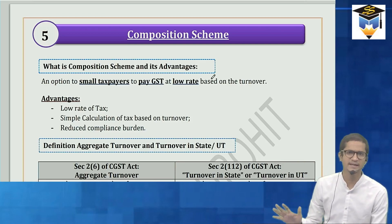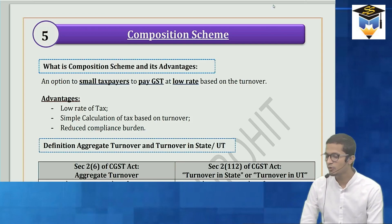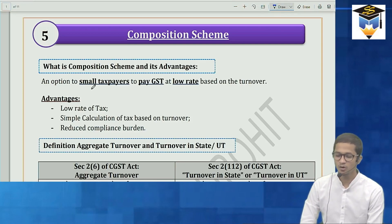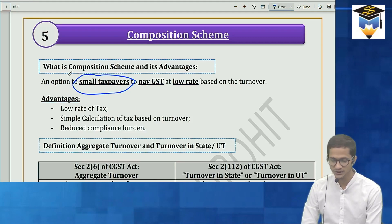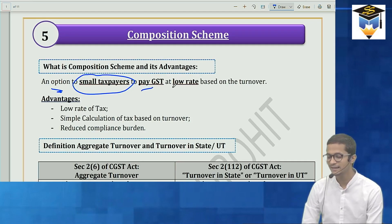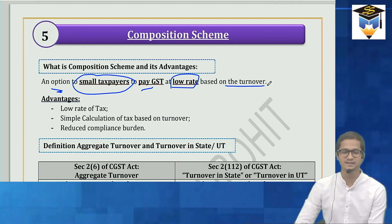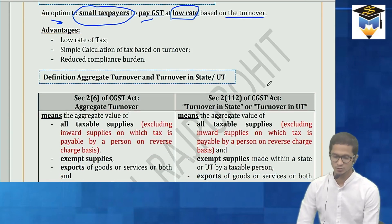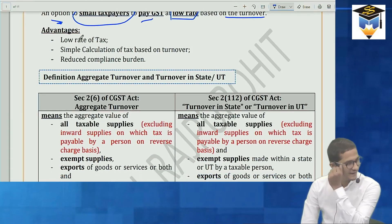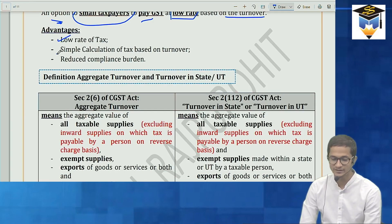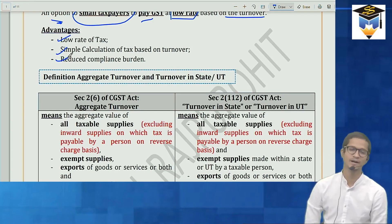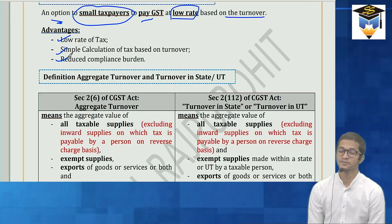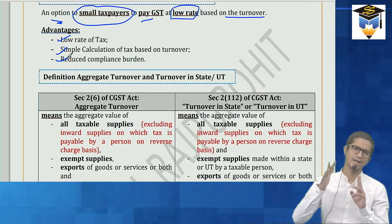Composition scheme is basically for small taxpayers. It is optional, not mandatory. Small taxpayers pay GST at a low flat rate based on turnover. The rate calculation is simple and the compliance burden is very low compared to the regular scheme.